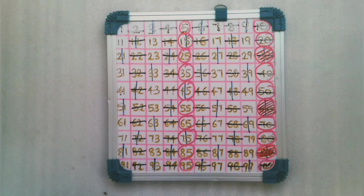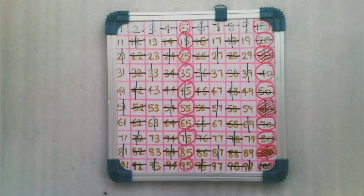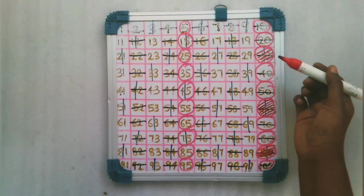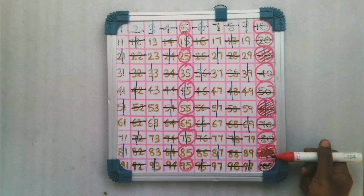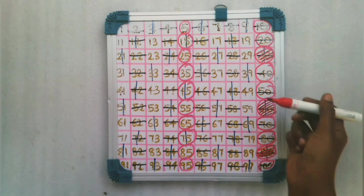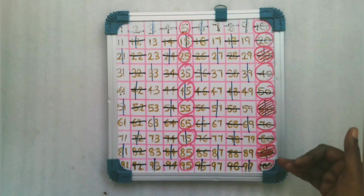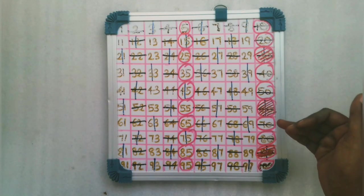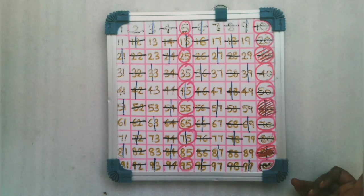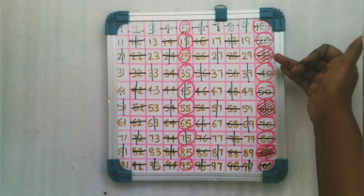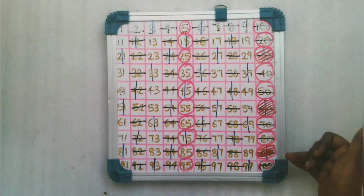So, what numbers have all three markings — horizontal line, vertical line, and circle? Those numbers are 30, 60, and 90. If we extend beyond 100, more common numbers would be available, but within 1 to 100, the common multiples of 2, 3, and 5 are 30, 60, and 90.